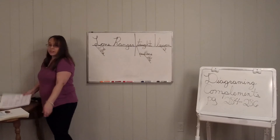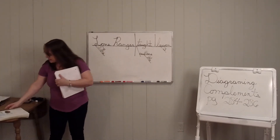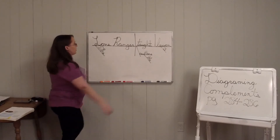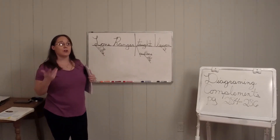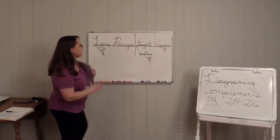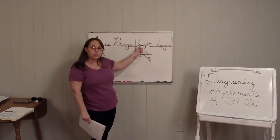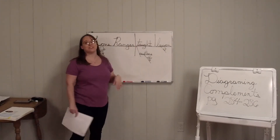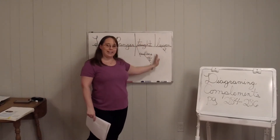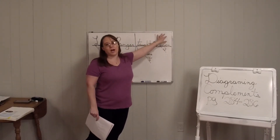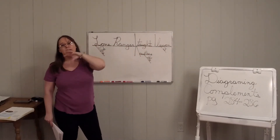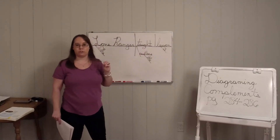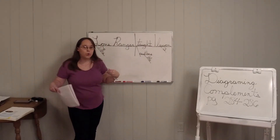Let's look at the next one. The sentence says: the lone ranger taught the rustlers a lesson. This is when we diagram the indirect object. Lone ranger is the subject — that's what the sentence is about. The action verb is taught. Then you have the straight line for your direct object, which is lesson. What did he teach? He taught the lesson. Now, the indirect object has to go under the verb — rustlers — because who did he teach the lesson to? The rustlers.